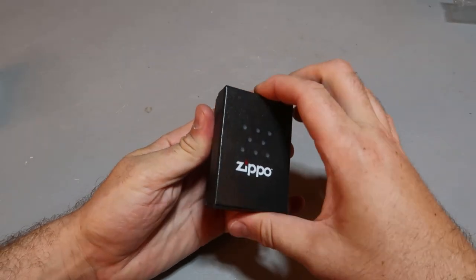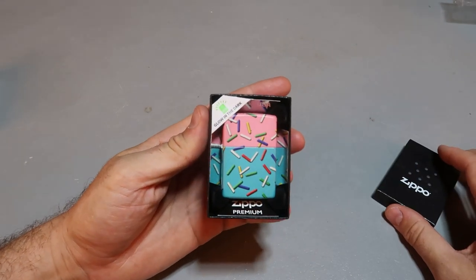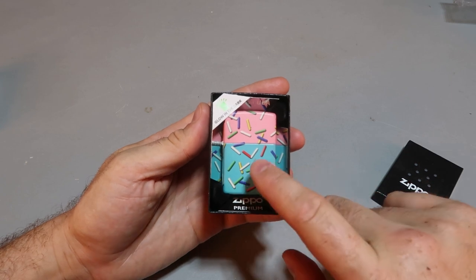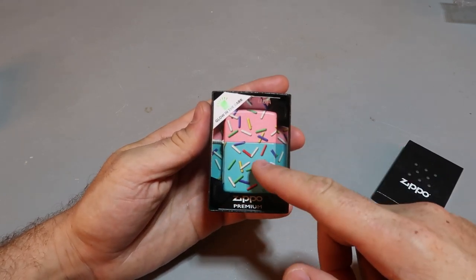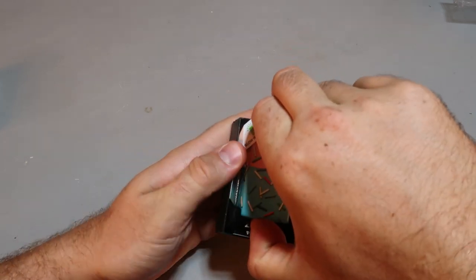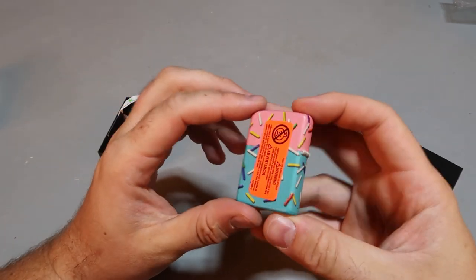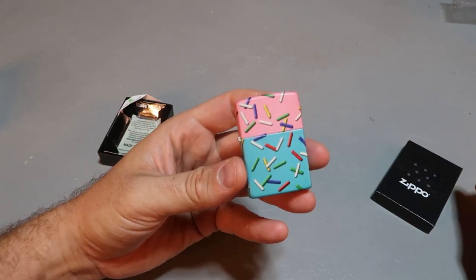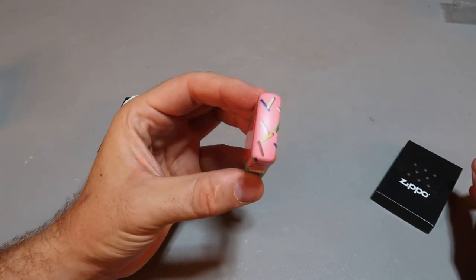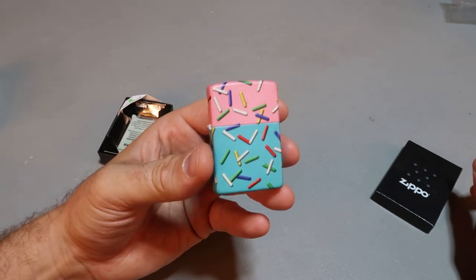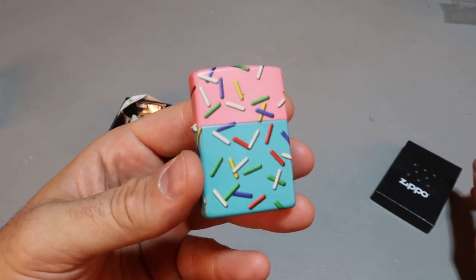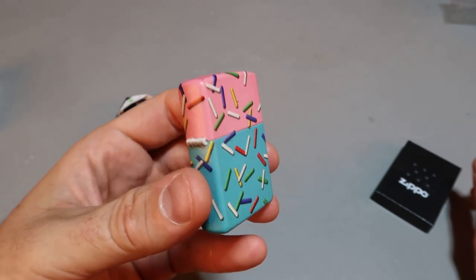Next, I got it here. Zippo donut glow in the dark. So this one used to be pink and blue. Now they reversed it, made it blue and pink. And it's pretty unique. Light art here. A Blade HQ exclusive. They make all sorts of donut items, like everyday carry stuff. Okay, let's keep it in a light a little bit and go in the dark, see what it looks like when it glows.